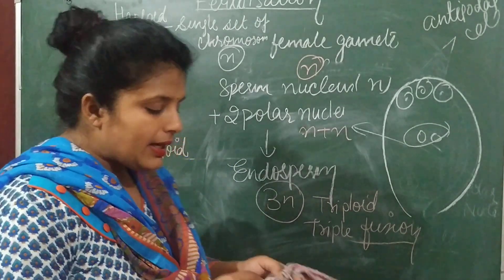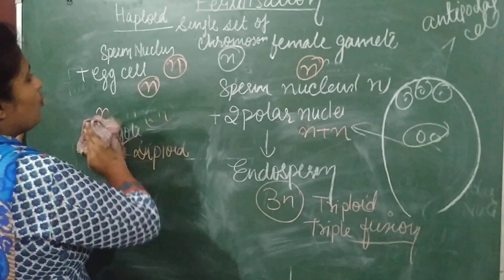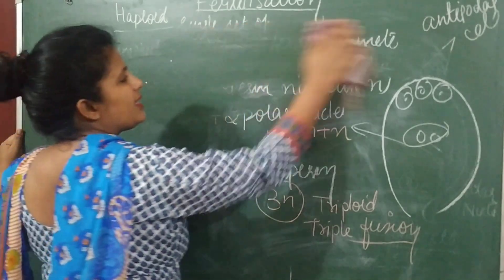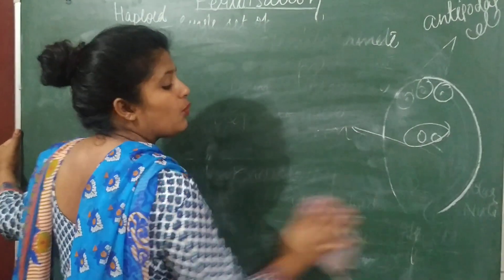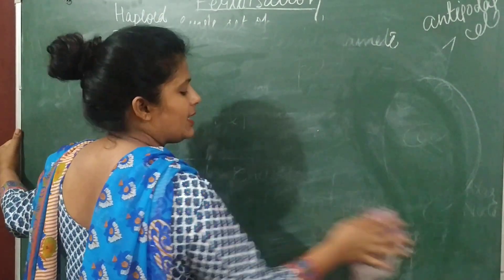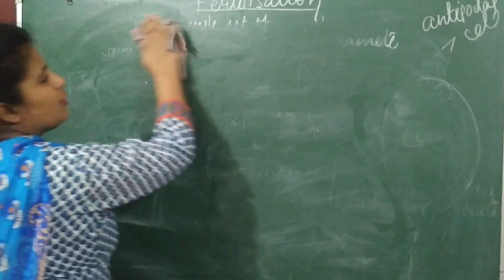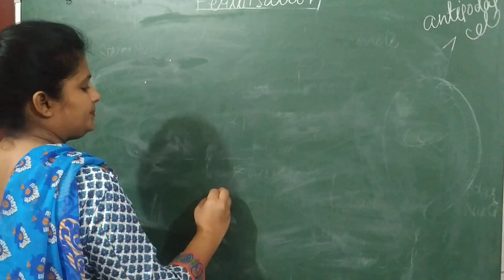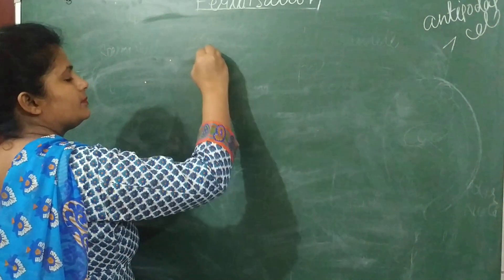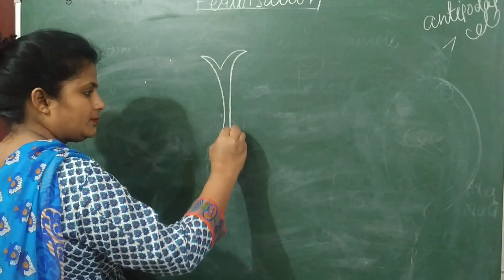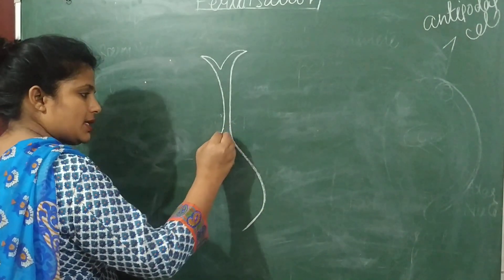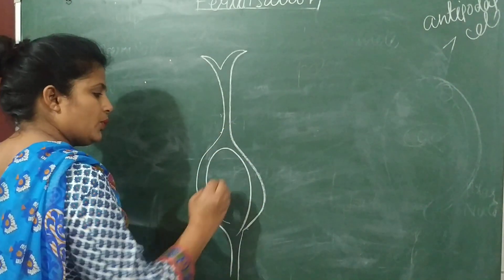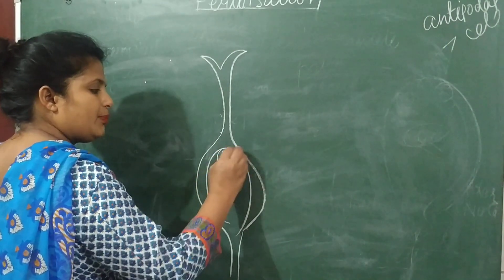Now let's discuss what happens after fertilization — the post-fertilization events. Let's look at the diagram of the flower: this is the pistil, this is the ovule, these are the embryo sac cells, two polar nuclei, egg cell, and synergid cells.